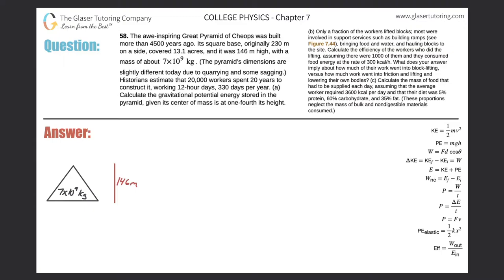Number 58. The awe-inspiring Great Pyramid of Cheops was built more than 4,500 years ago. Its square base, originally 230 meters on a side, covered 13.1 acres and it was 146 meters high with a mass of about 7 times 10 to the 9 kilograms. The pyramid's dimensions are slightly different today due to quarrying and some sagging. Historians estimate that 20,000 workers spent 20 years to construct it while working 12-hour days, 330 days per year.